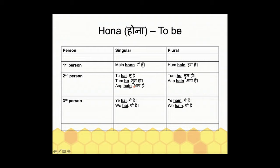With 'tum' it's 'ho' — 'tum ho.' With 'tu' it's 'hai' — 'tu hai.' 'Hai' denotes singular, which is why 'hai' is also used with 'ye' and 'wo': 'ye hai' means 'this is,' 'wo hai' means 'that is.'